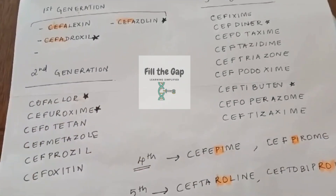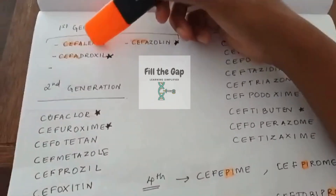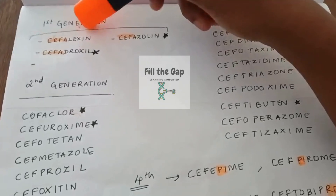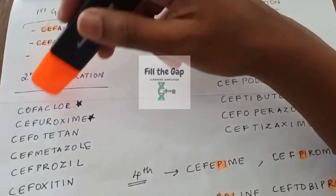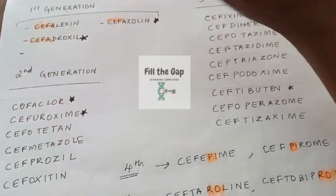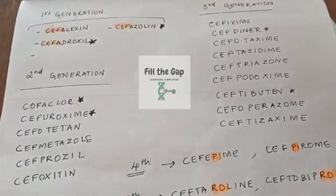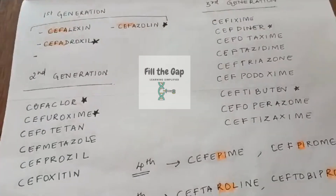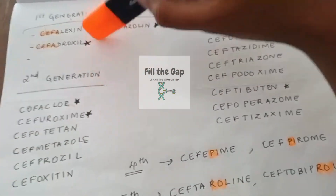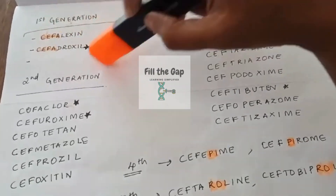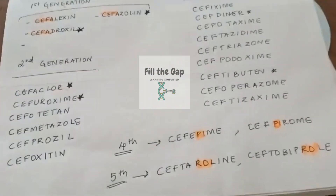What examiners do is frame questions like this: 'All of the following are first generation drugs except,' and they put four options including cephachlor. When you look at the options you see 'cepha' in all of them. The exception is cephachlor, which is actually in the second generation.